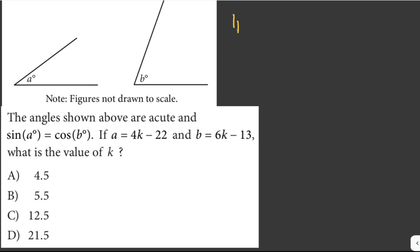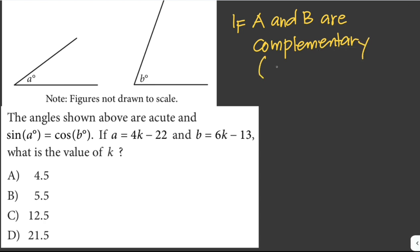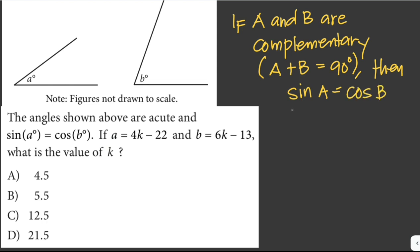Let's recall that if a and b are complementary angles, which means the sum a plus b is equal to 90 degrees, then sine of a is just equal to cosine of b, or tangent of a is equal to cotangent of b. Since this follows the complementary angle property, we can use the equation a plus b equals 90.